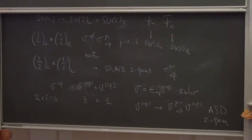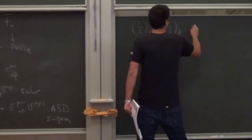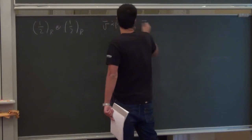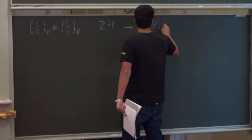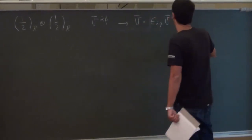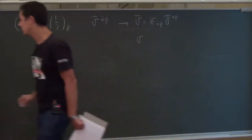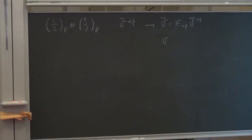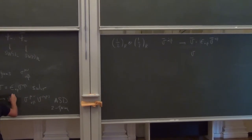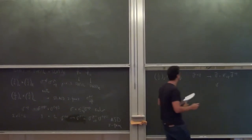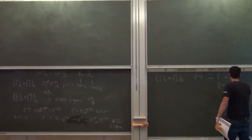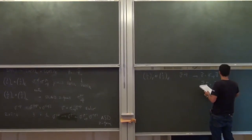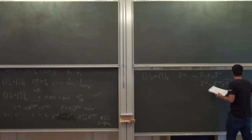Similarly, for the (0, ½)_R representation, you can consider objects that give a scalar V = ε_{α̇β̇} V^{α̇β̇}, and also V_{μν}^{sd} using σ̄, which gives a self-dual two-form. So starting from spinors: taking the tensor product of two different spinors gives a vector; taking the same left spinor with itself gives a scalar and an anti-self-dual two-form.